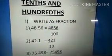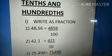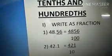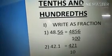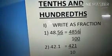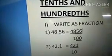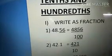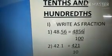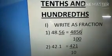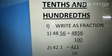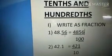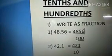The first problem is 48.56. Children, you write the number except the decimal point. So you write 4856. Here I did not put the decimal point. Instead, you put or draw the division symbol — divided by.